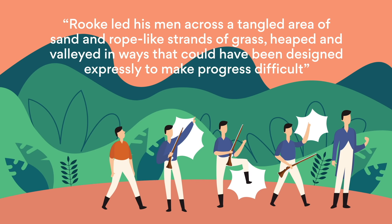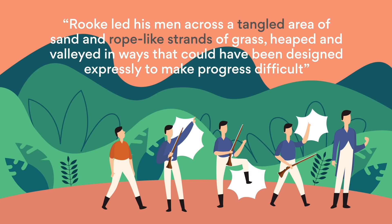'Rook led his men across a tangled area of sand and rope-like strands of grass heaped and valued in ways that could have been designed expressly to make progress difficult.' This description showcases how the men don't belong on this new land. In a metaphorical sense, the land's tangles and rope-like strands prevent them from reaching their target, showcasing Grenville's disapproval because the men are just forcing themselves through.